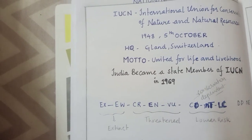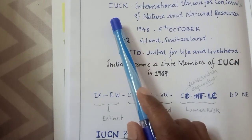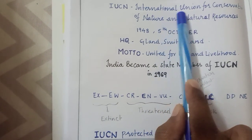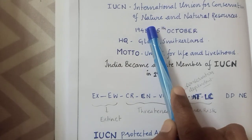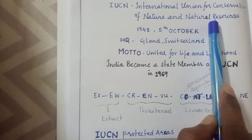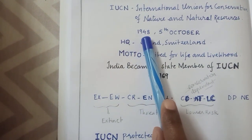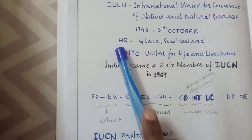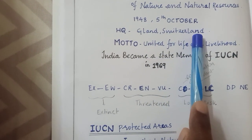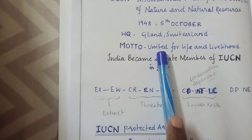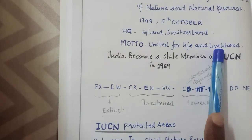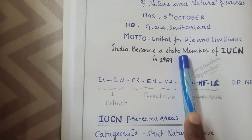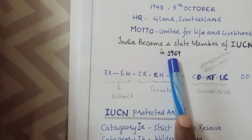Hi everyone, this video is regarding IUCN. IUCN stands for International Union for Conservation of Nature and Natural Resources. It was founded in 1948 on 5th October. Its headquarters is at Gland, Switzerland, and the motto of IUCN is 'United for Life and Livelihood.' India became a member of IUCN in 1969.